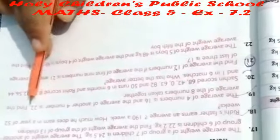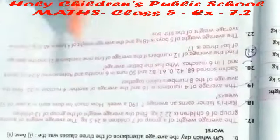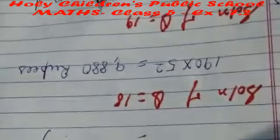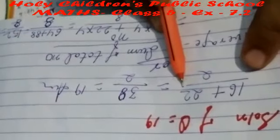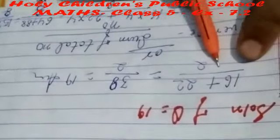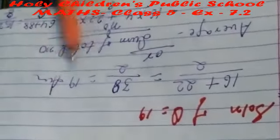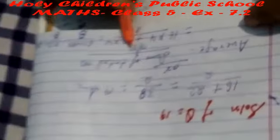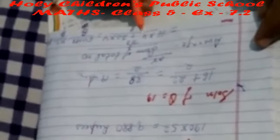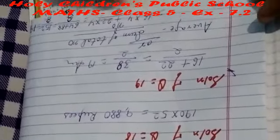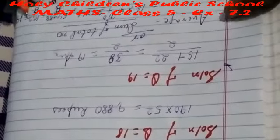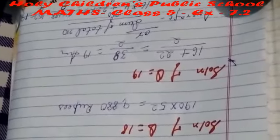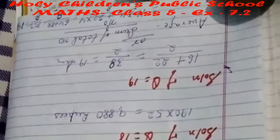Question number 19: the average of 4 numbers is 16 and the average of another 4 numbers is 22. Find the average of all 8 numbers together. Method 1: (16 + 22) ÷ 2 = 38 ÷ 2 = 19. Method 2: (16 × 4 + 22 × 4) ÷ 8 = (64 + 88) ÷ 8 = 152 ÷ 8 = 19. So the average of all 8 numbers is 19.